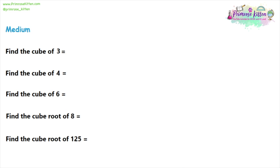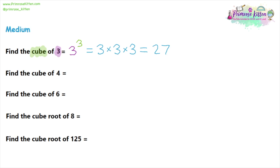Now the medium questions. When we say we want to find the cube of three, we can write that as three to the power of three. When we say 'square' it's power two, and 'cube' it's power three. This means we have three threes being multiplied together. Do it one step at a time: three times three is nine, then nine times three is 27. So the cube of three, or three to the power of three, is 27.